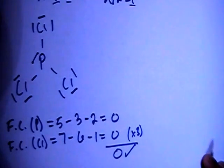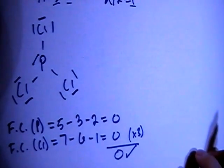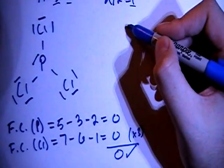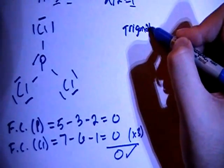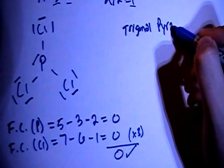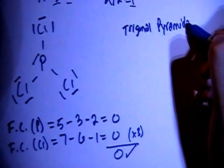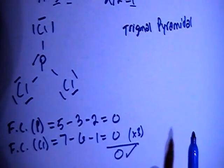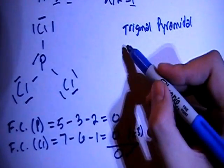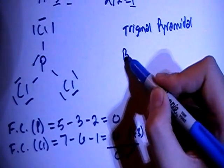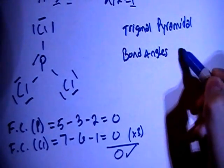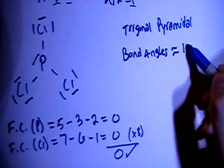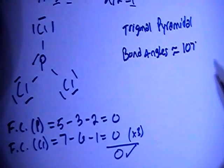Alright, so now we can go ahead and talk about the shape a little bit. This is going to be trigonal pyramidal. That's the shape. And the bond angles for this shape are approximately 107 degrees.